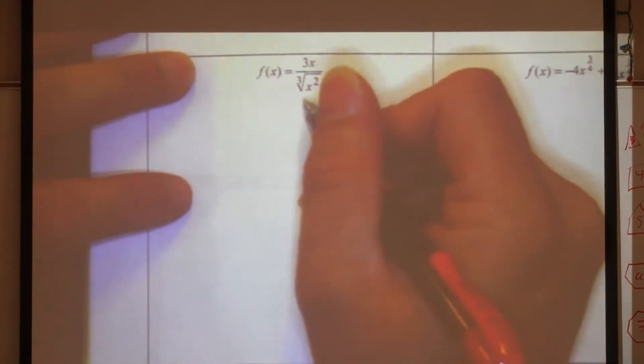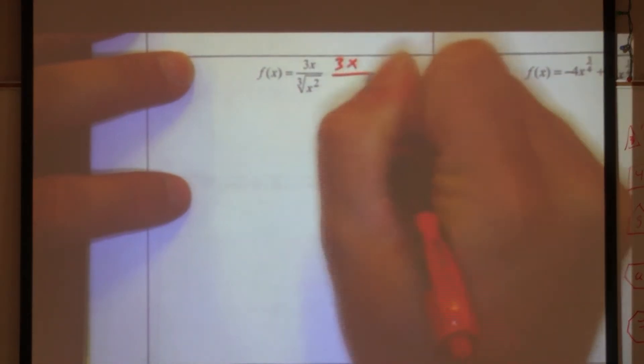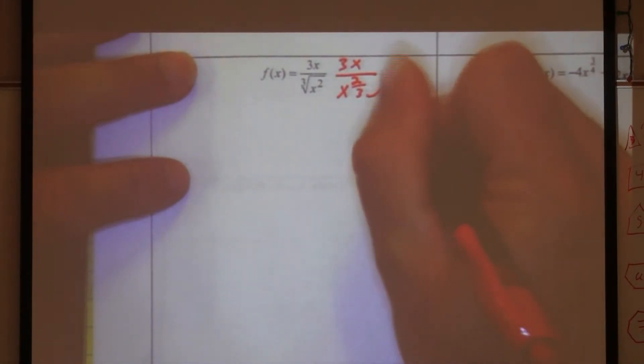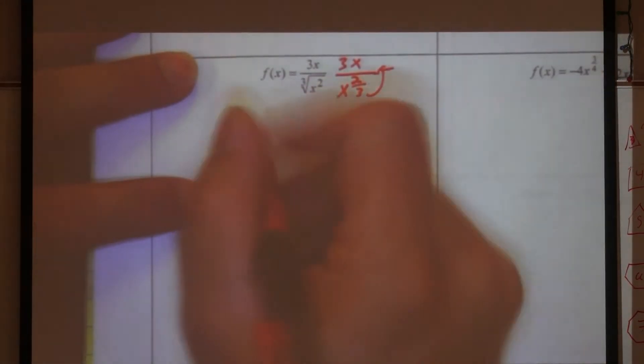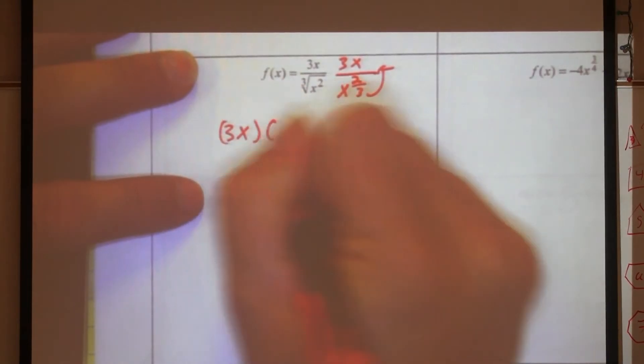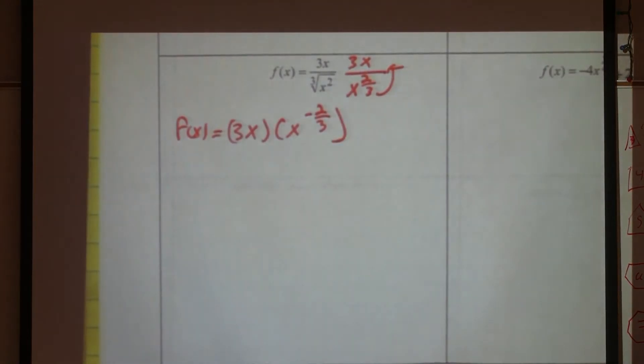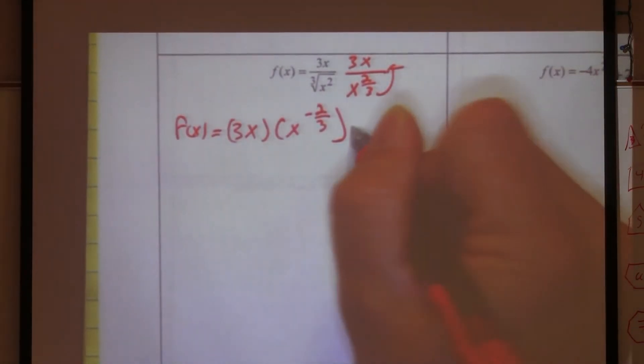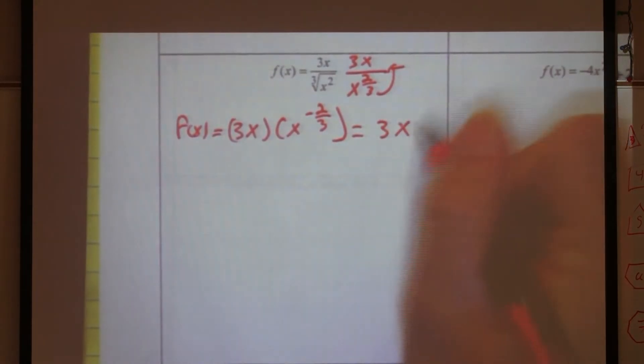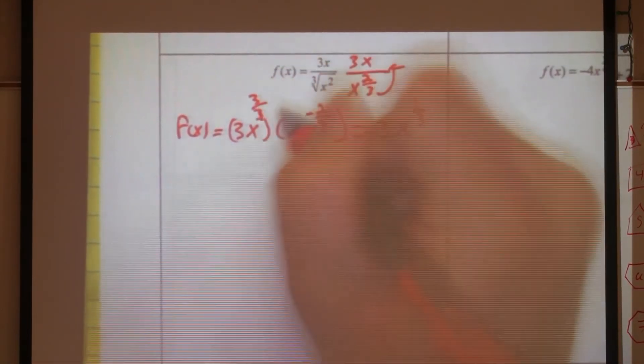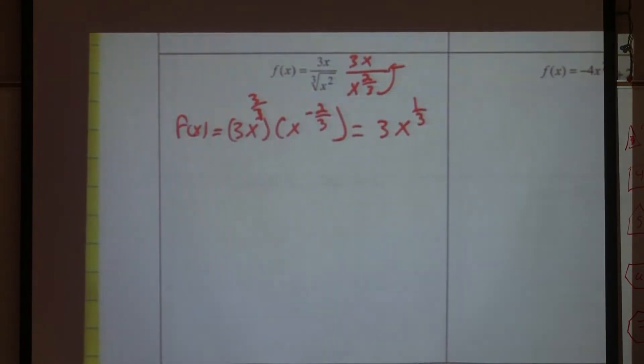So, what is this guy going to become? Three X over X to the two over three. And now, what do we want to do? Take it to the top where the party never stops? So, now we have three X times X to the negative two thirds. And what will that become? One third. And it becomes three X to the one third. Because this was a one, which is really three over three, right? So, three take away two is one. Are we okay? All right. Let's get the derivative.